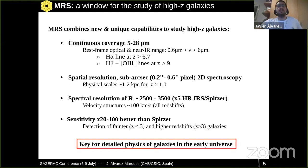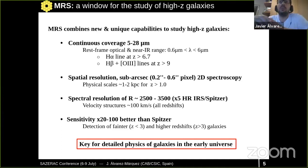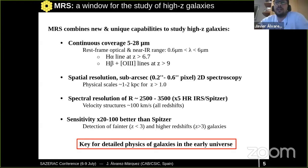The MRS combines new and unique capabilities to study high-redshift galaxies. Its continuous coverage from 5 to 28 microns will allow us to study the rest-frame optical and near-infrared range in high-redshift galaxies. For example, the H-alpha emission line will be observed for redshifts higher than 6.7, and H-beta and [OIII] will be accessible for galaxies at redshift higher than 9. Its spatial resolution will allow us to study physical scales of 1 to 2 kiloparsecs at redshift higher than 1, and its spectral resolution will allow us to disentangle velocity structures close to 100 km/s.